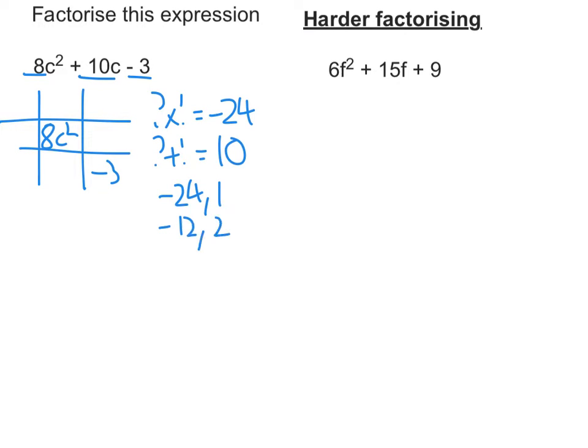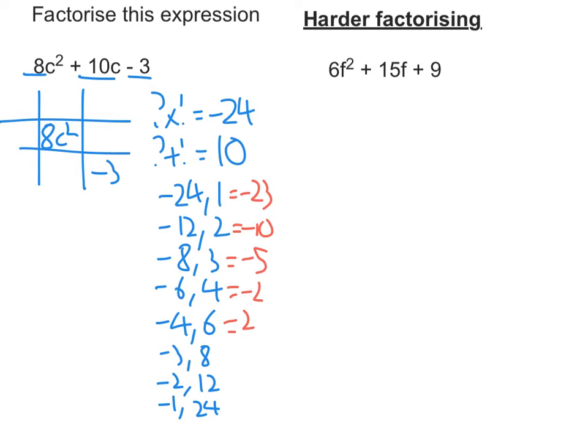negative 12 and 2, negative 8 and 3, negative 6 and 4. And then we sort of start flipping these over. Negative 4 and 6, then we're going to get negative 3 and 8, negative 2 and 12, and negative 1 and 24. See which pair adds to get positive 10. That's negative 23, negative 10, negative 5, negative 2, 2. So we're now on the positives. 5, 10. So it's this one here, negative 2 and 12.